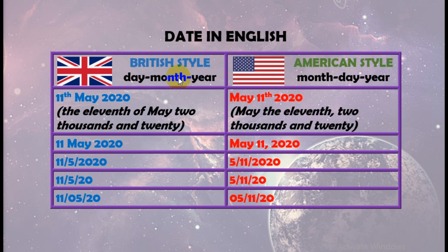Untuk British style, urutan tanggal dimulai dari hari, bulan, lalu tahun. Penulisan tanggalnya bisa menggunakan ordinal number atau bilangan urut, bisa juga menggunakan cardinal number atau bilangan pokok. Jika menggunakan bilangan urut, maka penulisan tanggalnya menjadi '11th May 2020', atau dibaca 'The 11th of May 2020', artinya hari ke-11 dari bulan May 2020. Atau bisa juga ditulis dengan bilangan pokok: '11 May 2020', dibaca 'eleven May two thousand and twenty'.